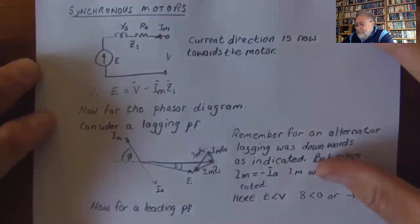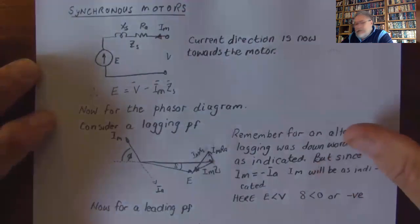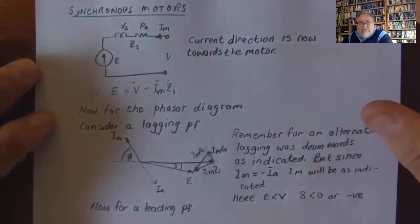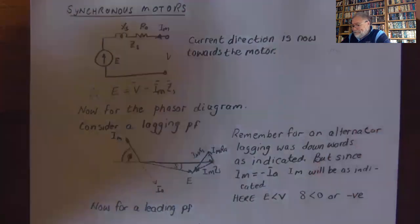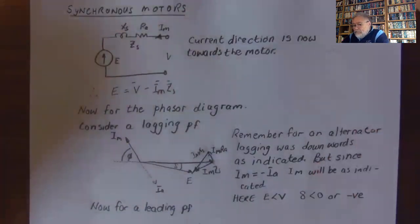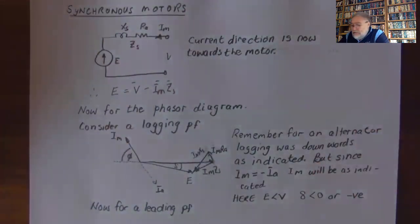Good morning. We're going to look at Chapter 3, which is synchronous motors. If we look at our single line diagram, we can see that the current is now flowing towards the motor, and therefore E is equal to V minus I_motor times Z_s.